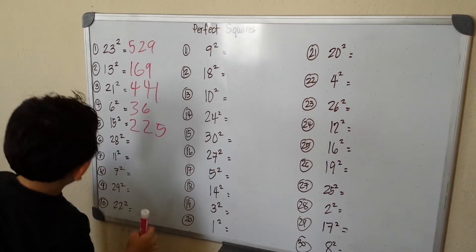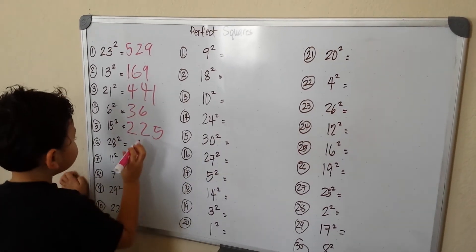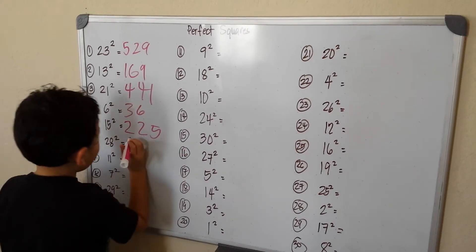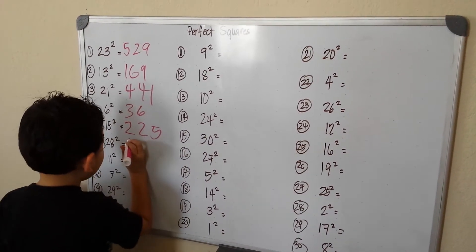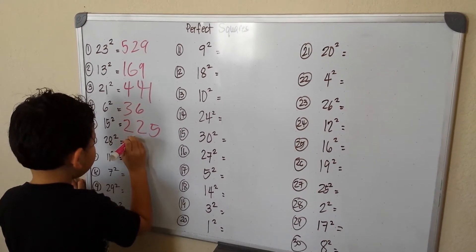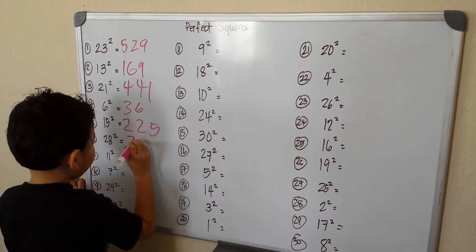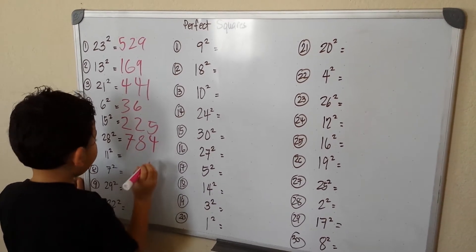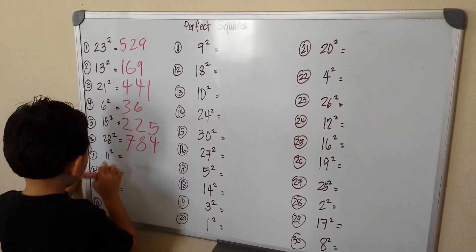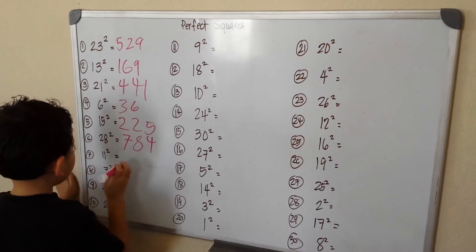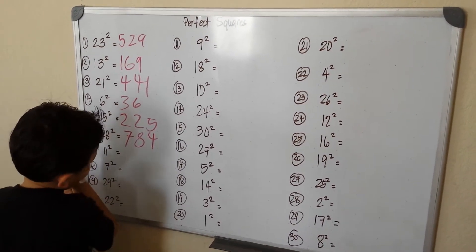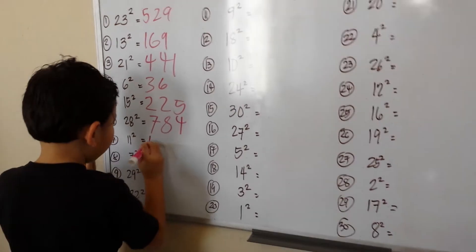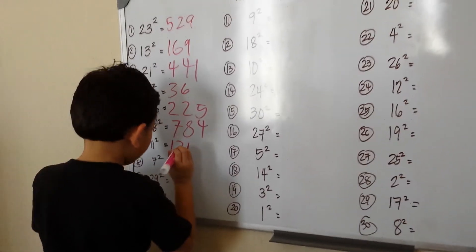Okay, 28 squared — I will think again. Okay, so that will be 784. 11 squared — let me think — oh, 121.